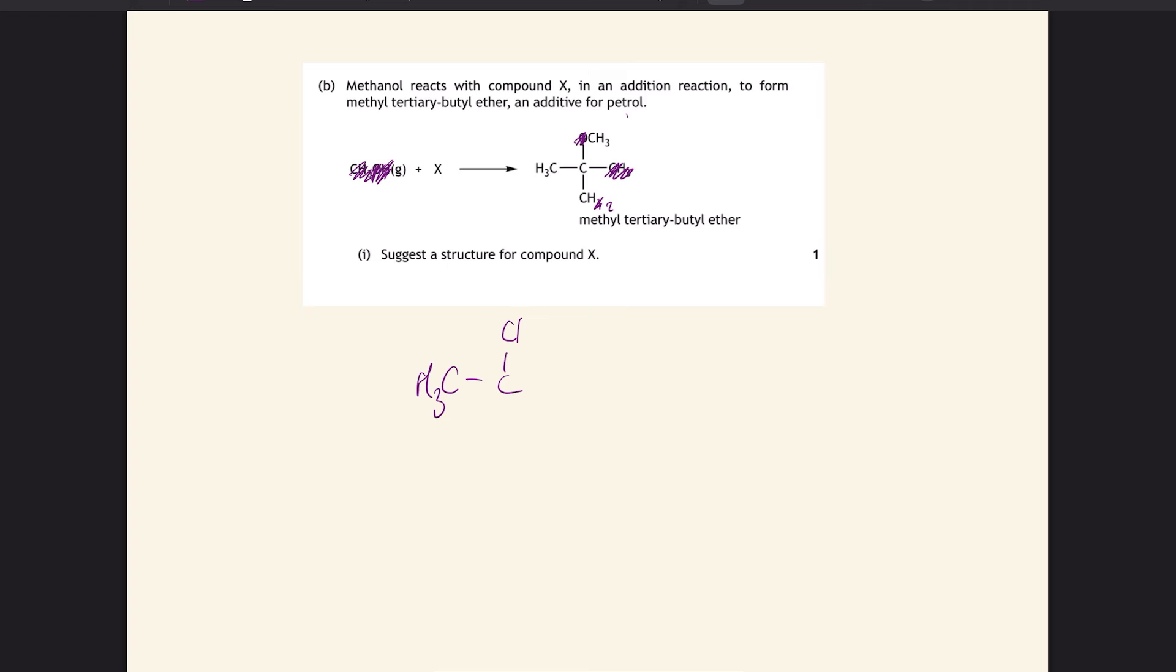That leaves us with whatever X is going to be. We have CH3C, a CH3, and a CH2, which means we must need to put a double bond in here because we don't have enough hydrogens to make it single bonds. So that must be your structure for compound X. Just score out the atoms that appear on both sides, and whatever you're left with is what must have been in your other reactant.